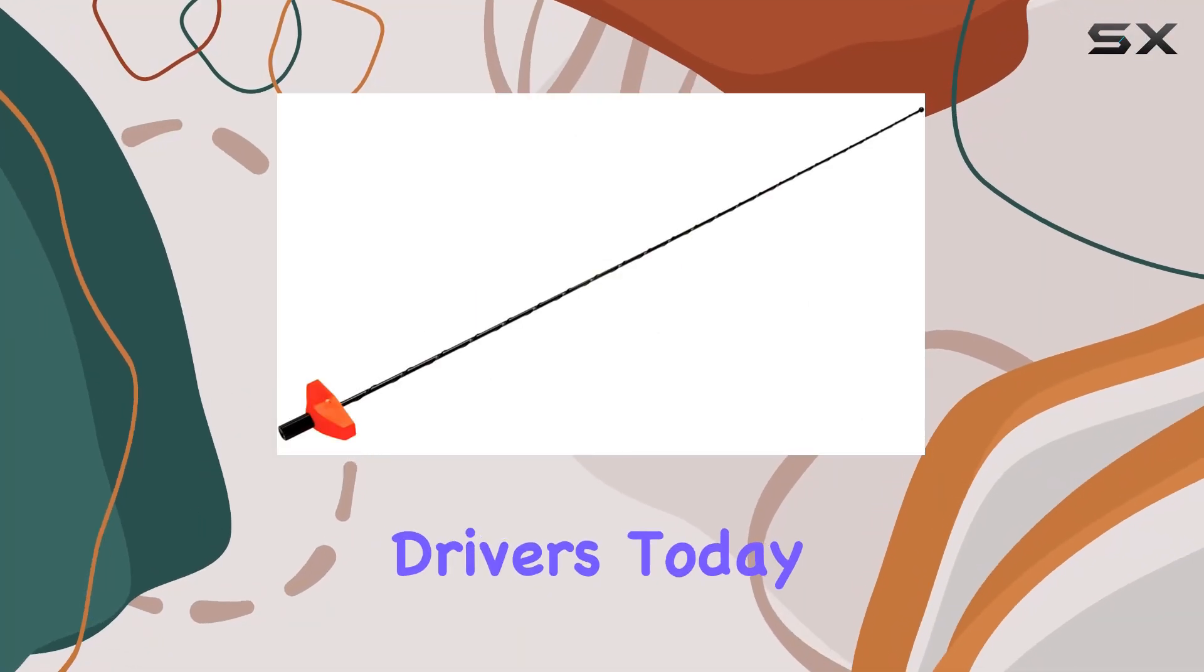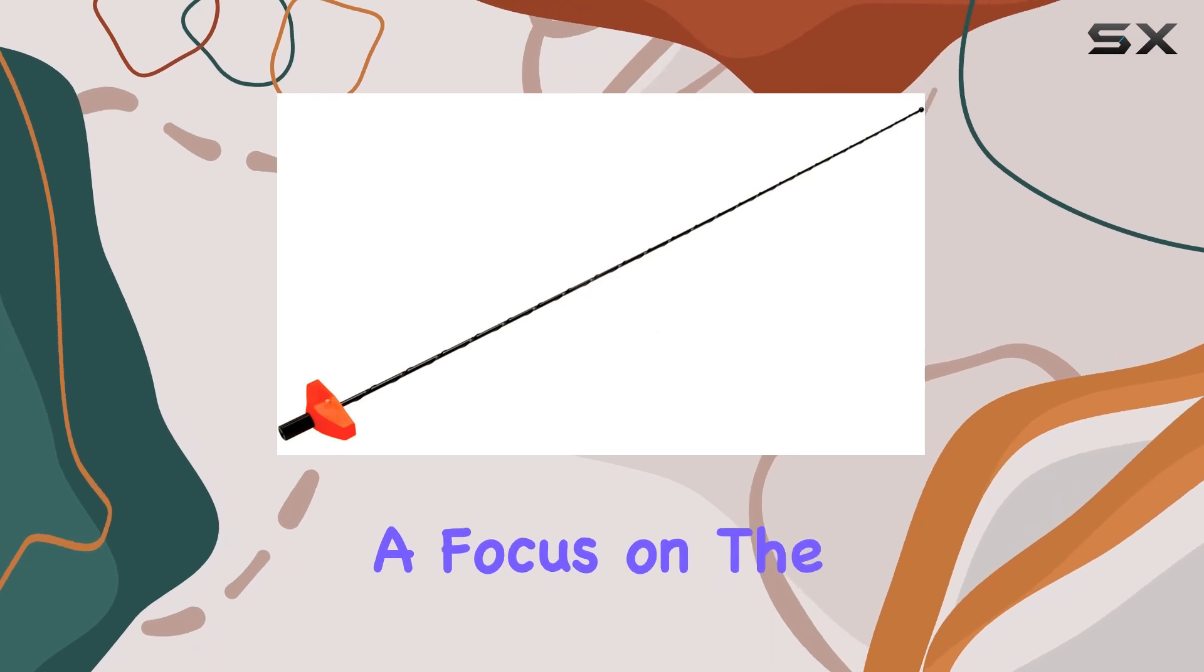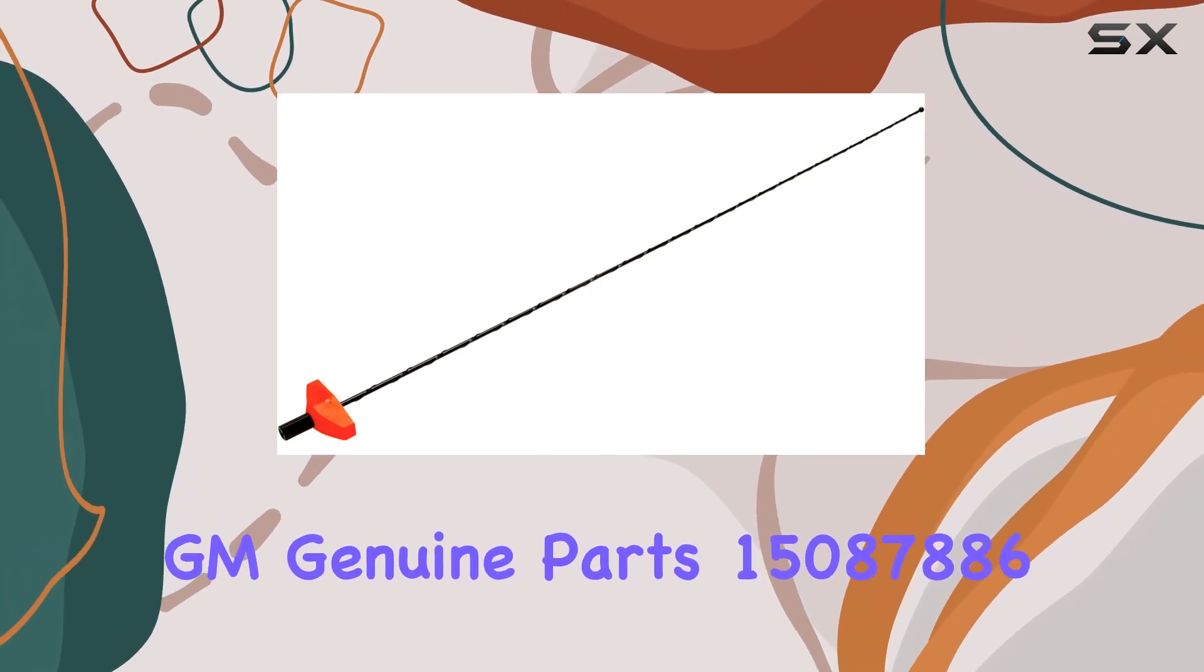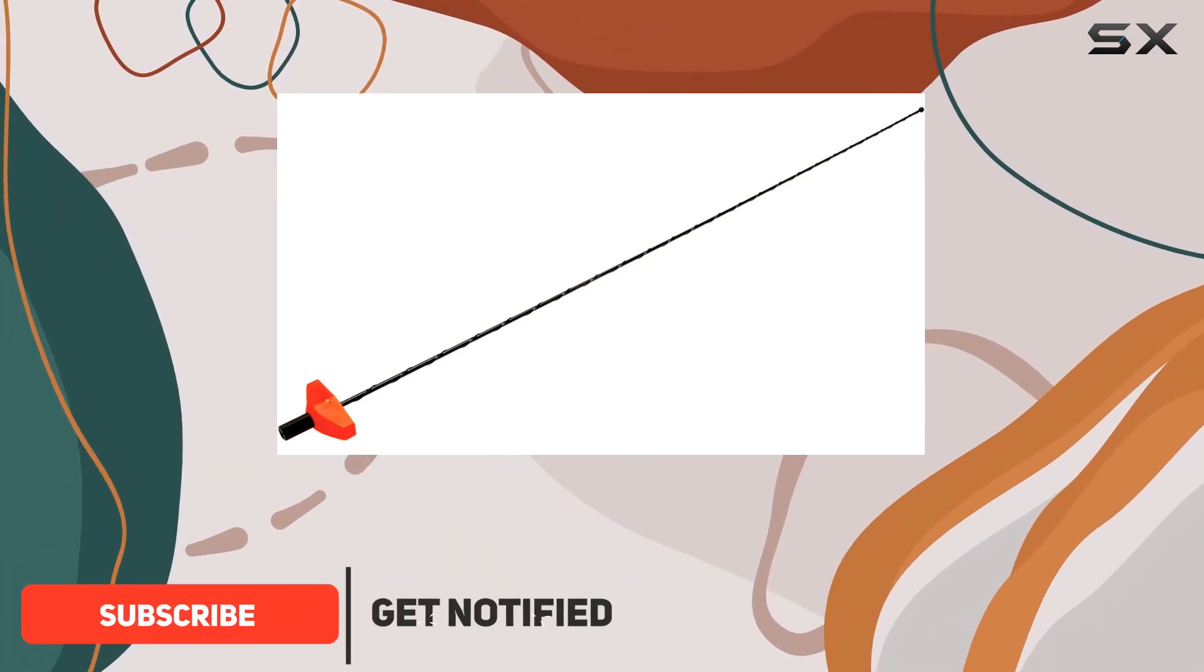Hey there, fellow drivers. Today, we're diving into the world of automotive antennas with a focus on the GM Genuine Parts 15087886M6X1.0-6H Thread Radio Antenna.